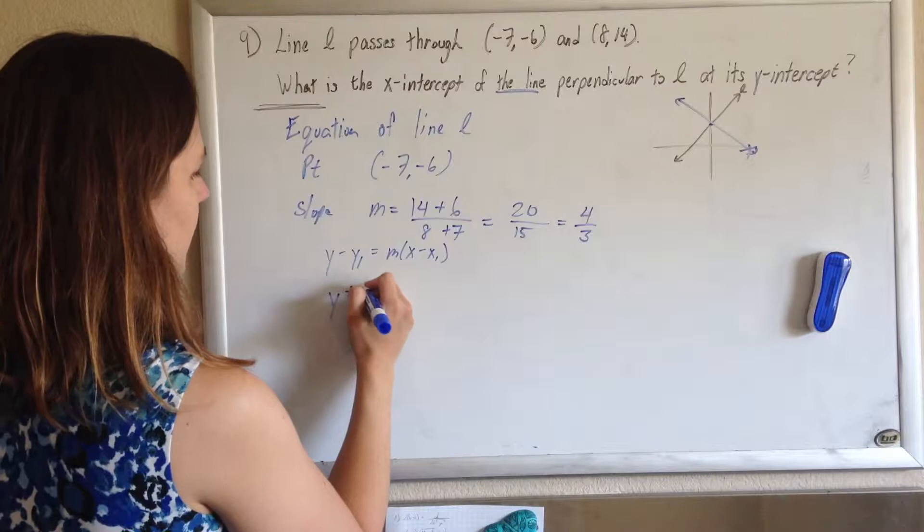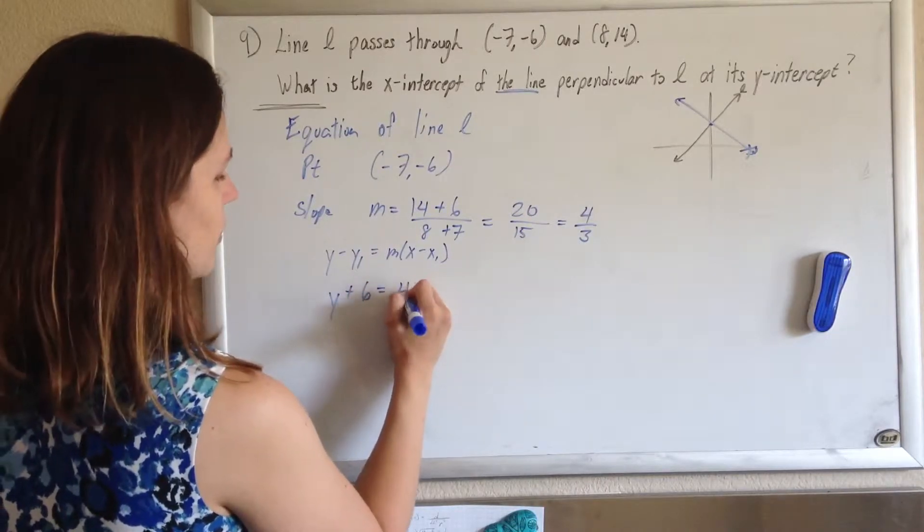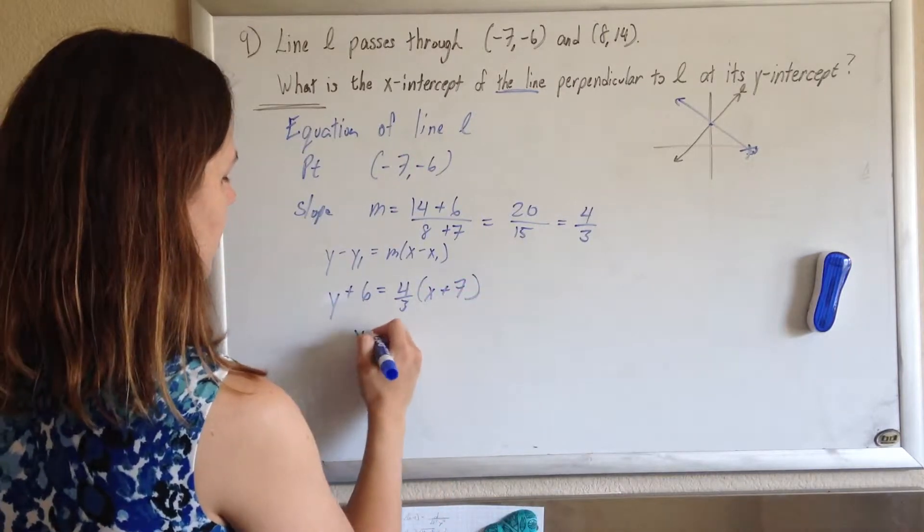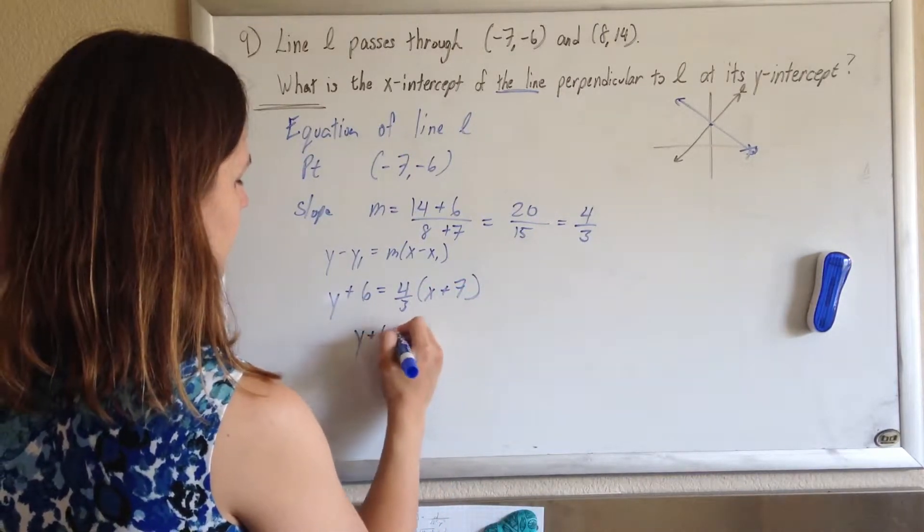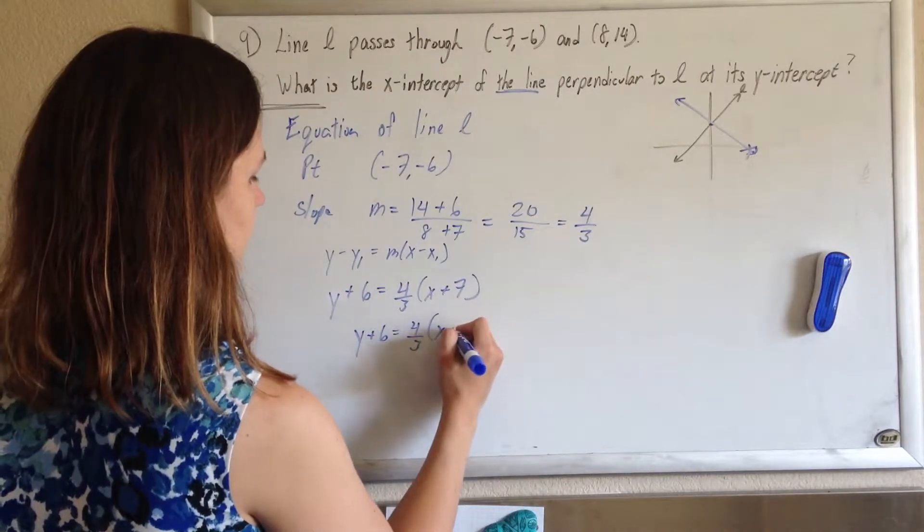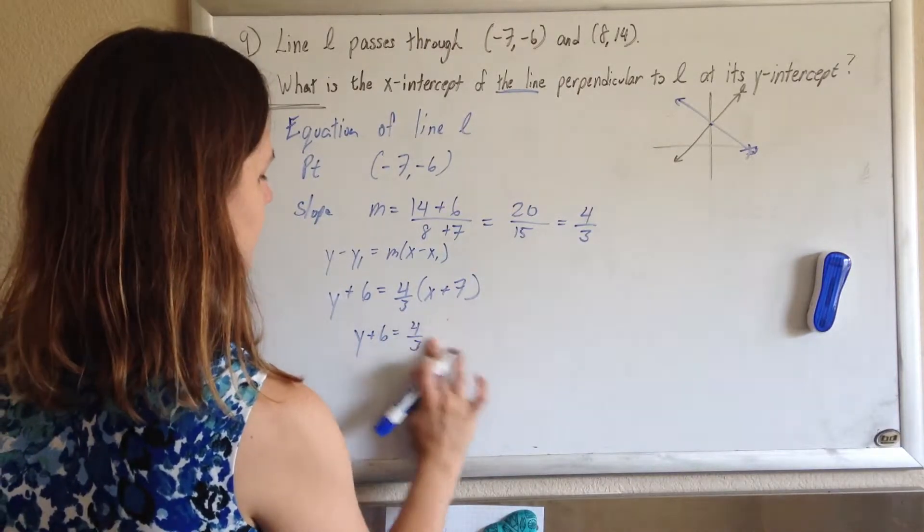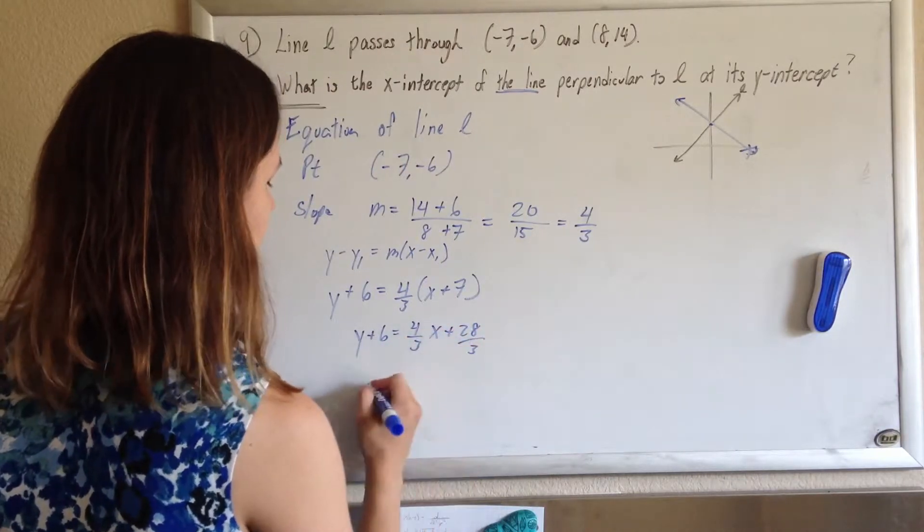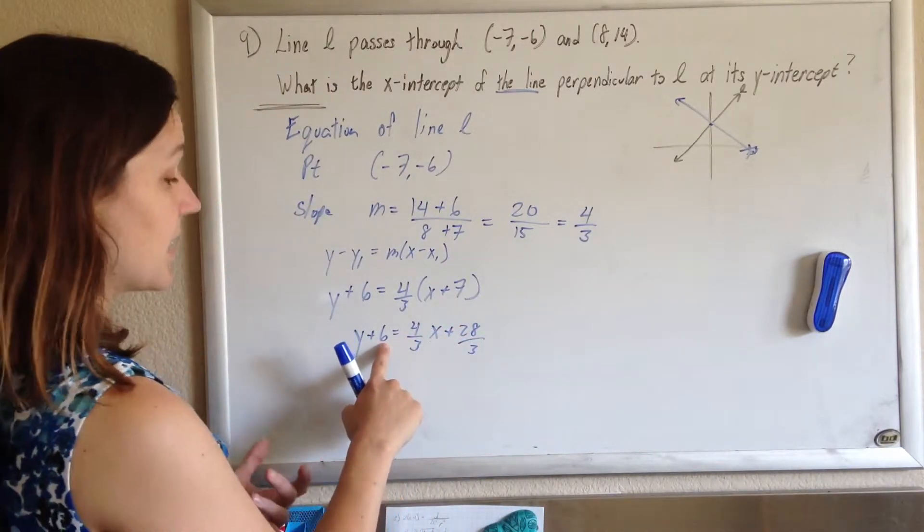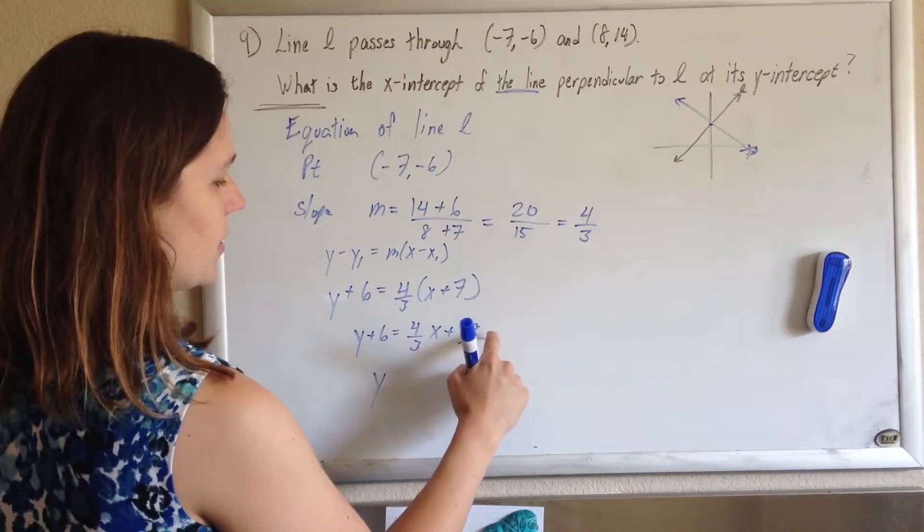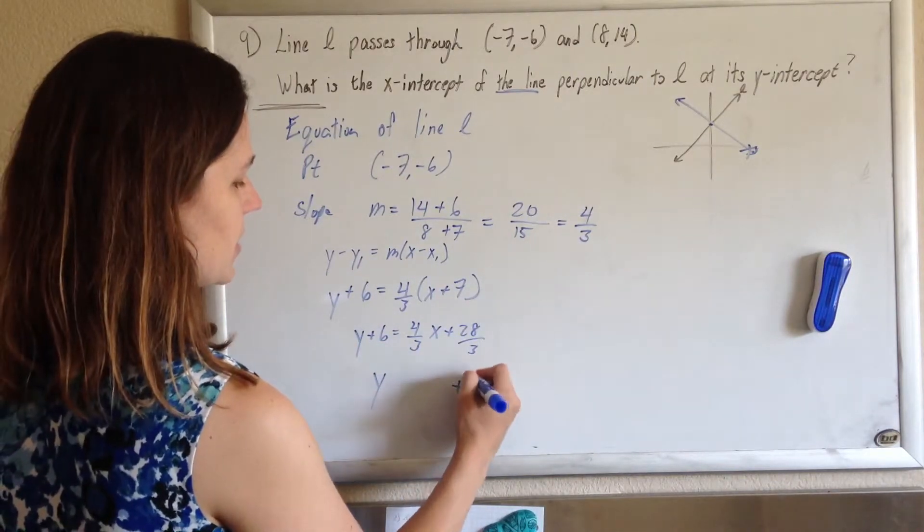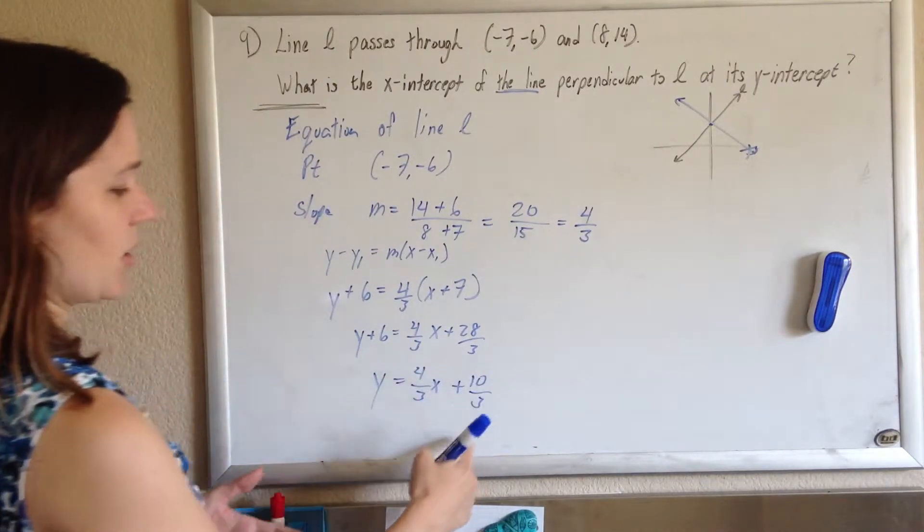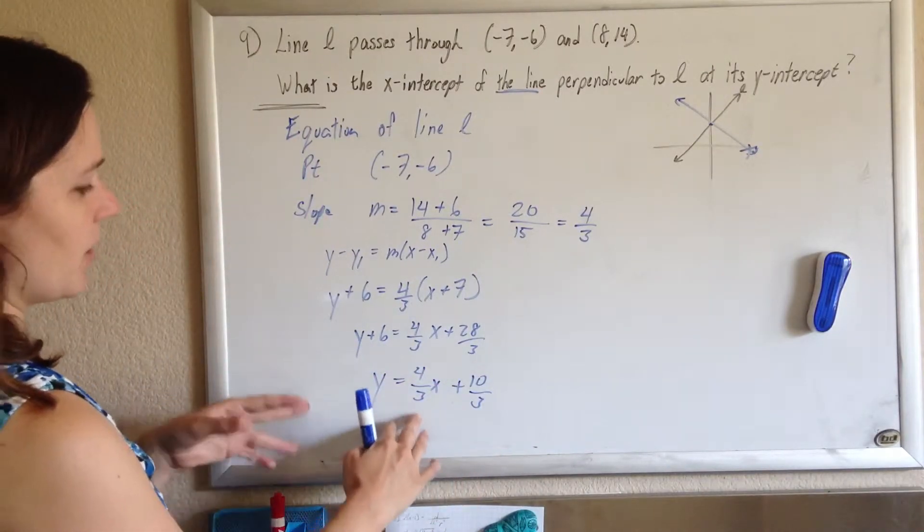I get y plus 6 equals 4 thirds times x plus 7. So y plus 6 equals 4 thirds x plus 28 over 3. If I subtract 6, I'm subtracting 18 thirds, so 28 thirds minus 18 thirds is 10 thirds, so y equals 4 thirds x plus 10 thirds. This is the equation of line L.